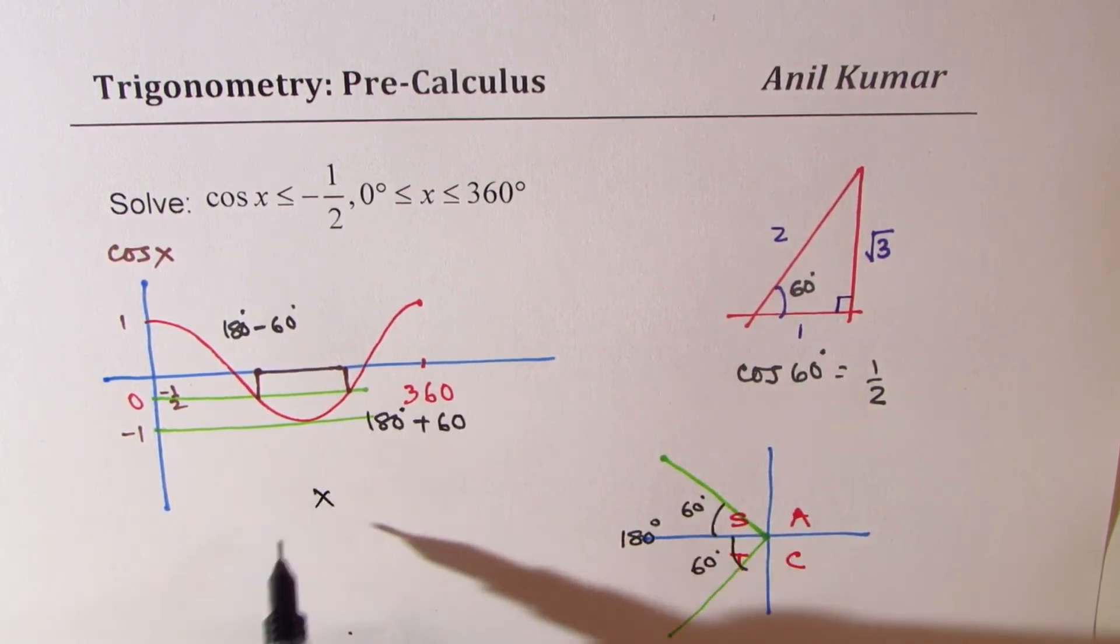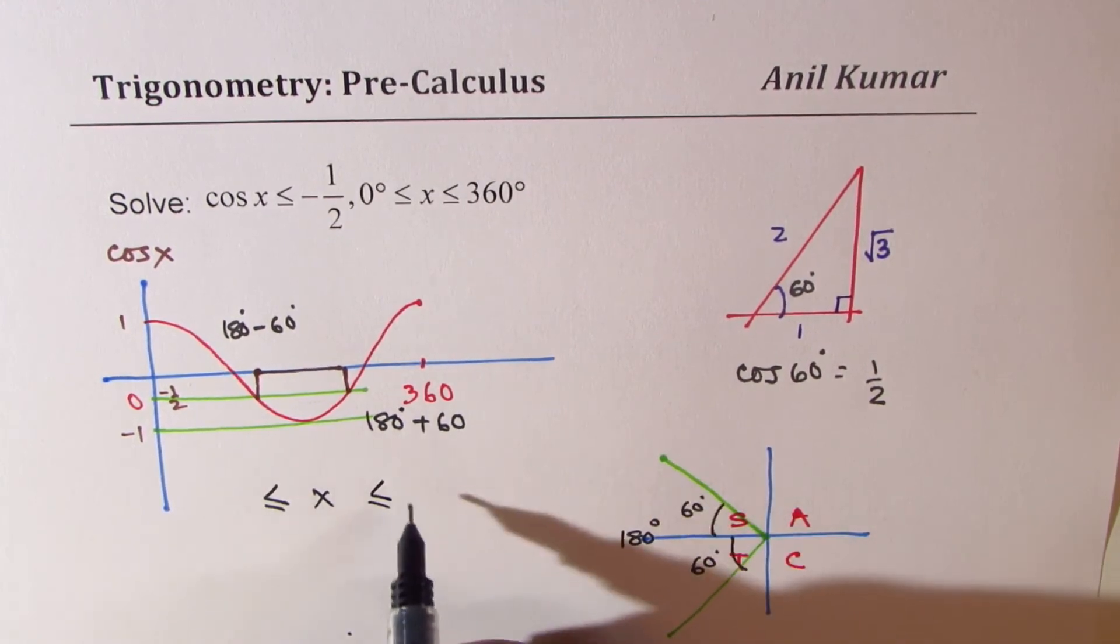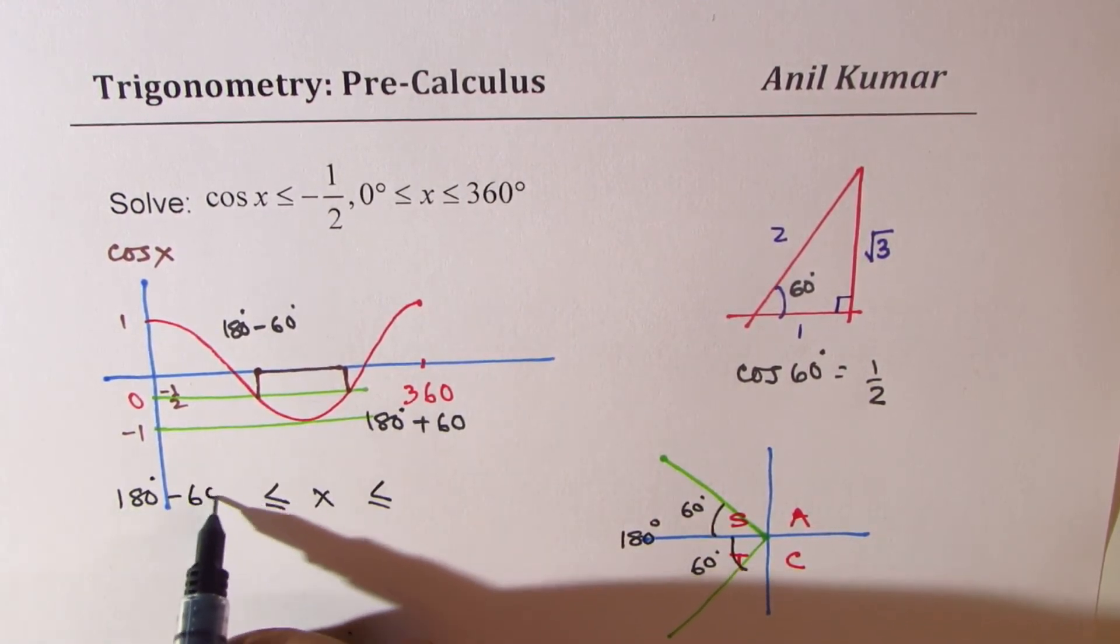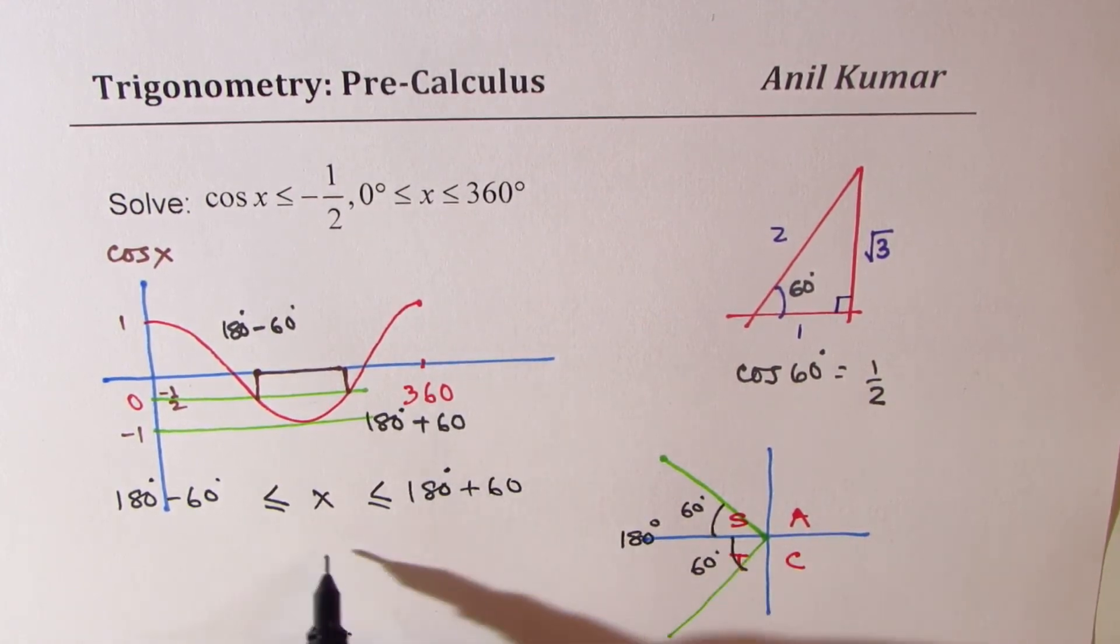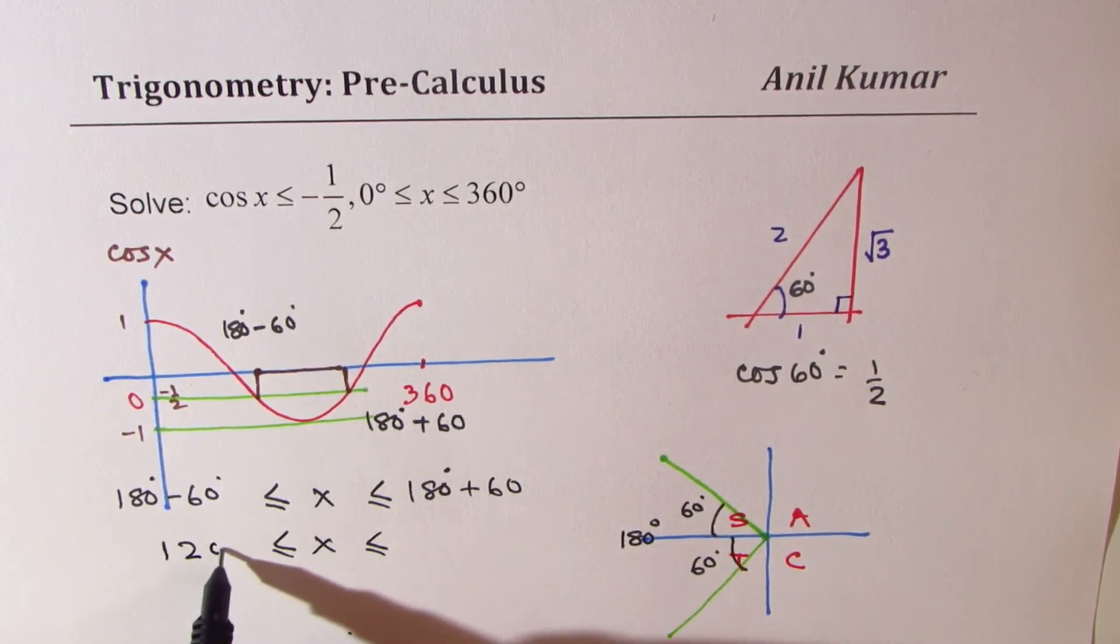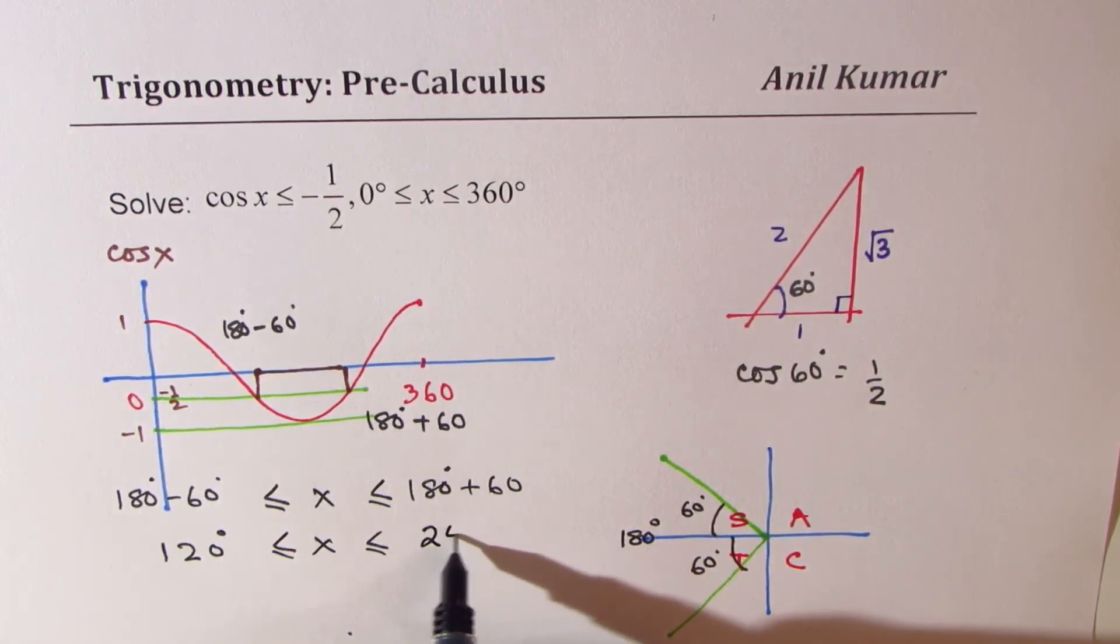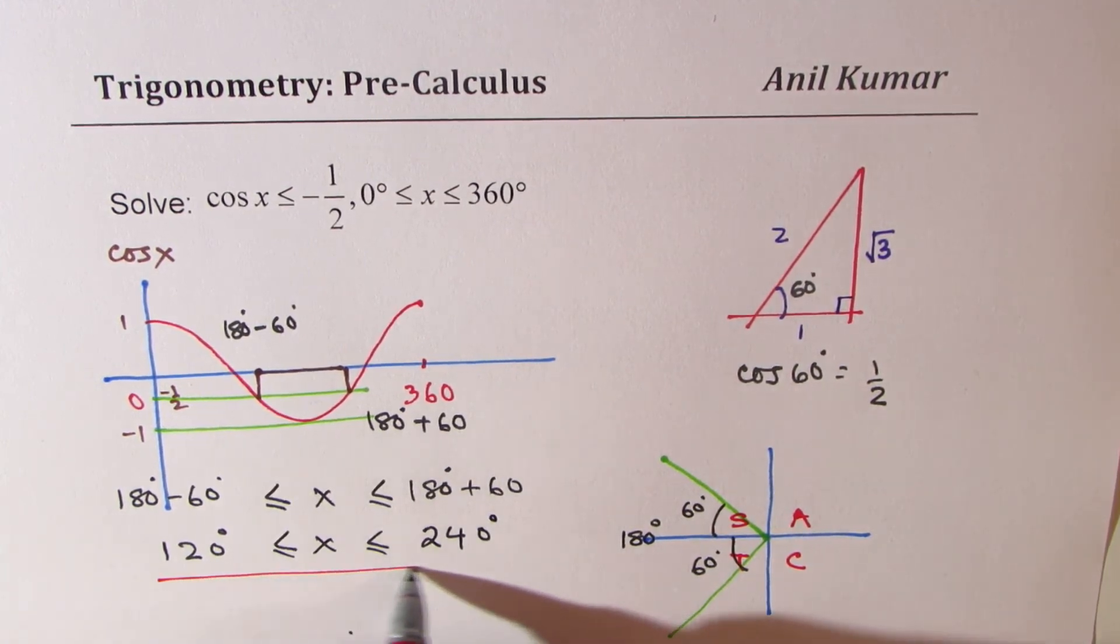So the x value is basically between 180 degrees minus 60 degrees and 180 degrees plus 60 degrees. So we have our solution right there: 120 degrees to 240 degrees. That becomes the solution of the given question.